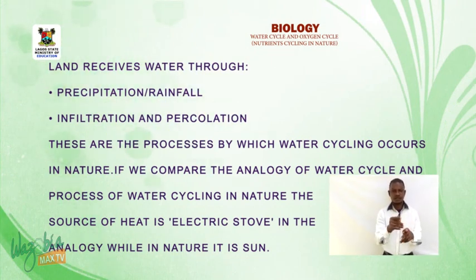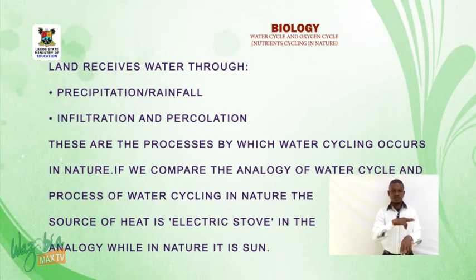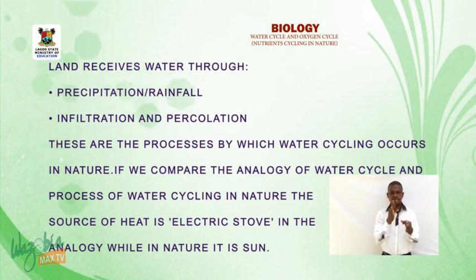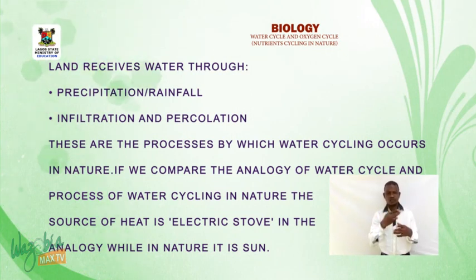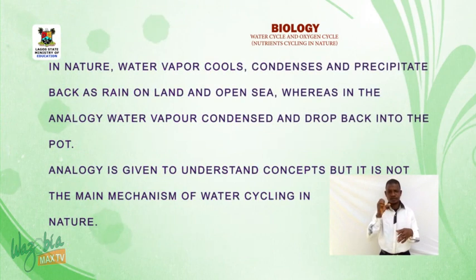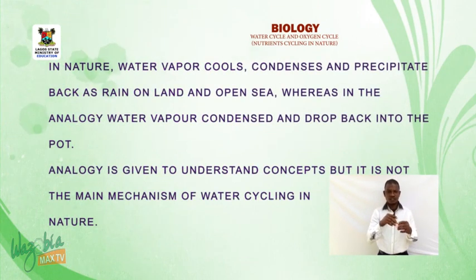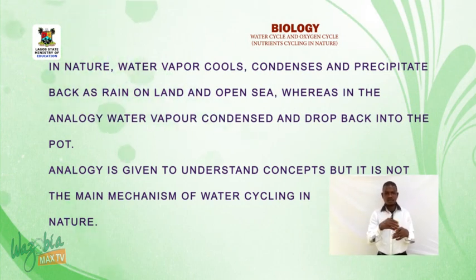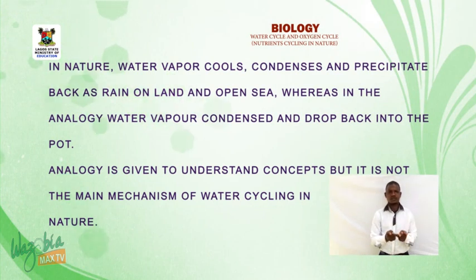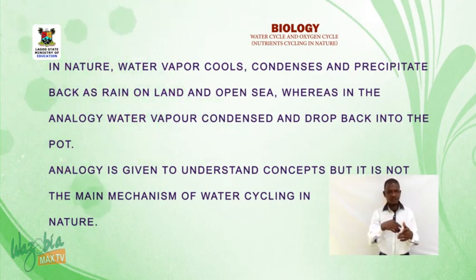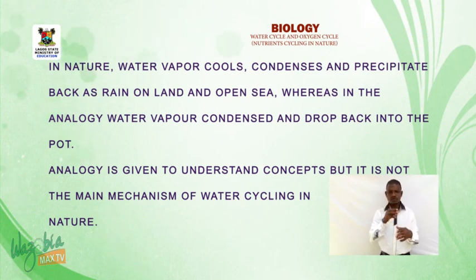Comparing the analogy with the water cycle in nature: the source of heat is an electric stove in the analogy, while in nature it is the sun. In nature, water vapor cools, condenses, and precipitates back as rain on land and open sea, whereas in the analogy, water vapor condenses and drops back into the pot. The analogy helps to understand concepts but is not the main mechanism of water cycling.